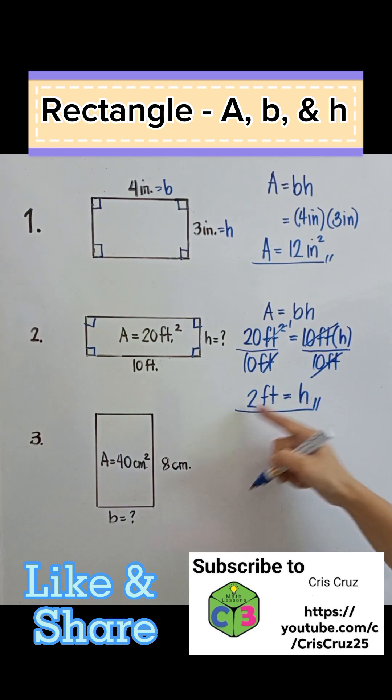Next one, make it a rectangle. Again, the area is base times the height. Area is given as 40 centimeter squared. The base now is unknown, and our height is 8 centimeter.